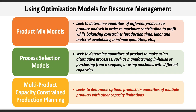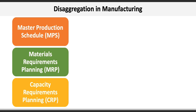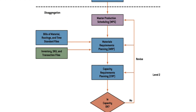Moving along to the disaggregation level of resource planning, there are three common techniques used for disaggregating aggregate plans into executable operations plans. They include Master Production Scheduling (MPS), Material Requirements Planning (MRP), and Capacity Requirements Planning (CRP). The aggregate plan feeds into the master production plan, which feeds into the materials requirements plan — which includes bills of materials and inventory — and that feeds into capacity requirements planning.